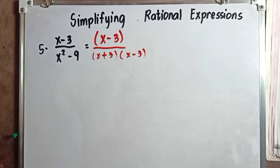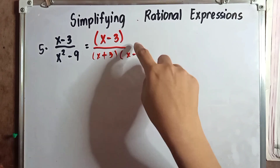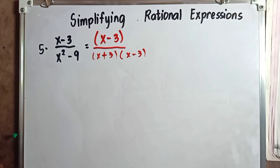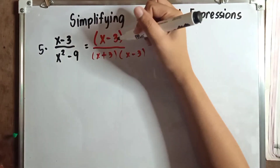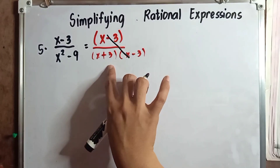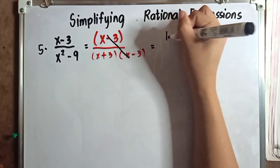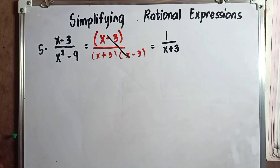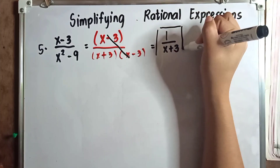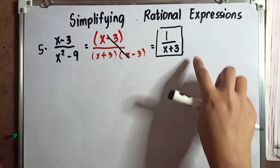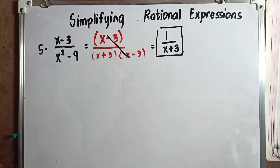After factoring, we cancel out the common factor. The common factor here is x minus 3 and x minus 3. We cancel them out. What remains is x plus 3 in the denominator, so we place 1 in the numerator. Our final answer is 1 over x plus 3. When asked to simplify x minus 3 over x squared minus 9, the answer is 1 over x plus 3.